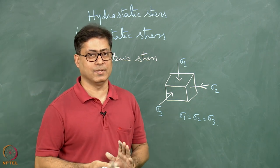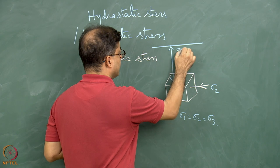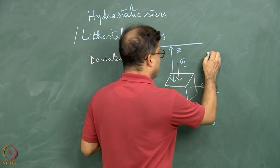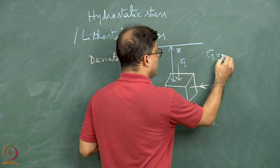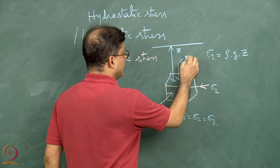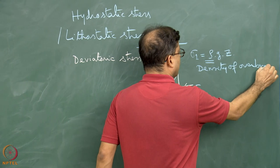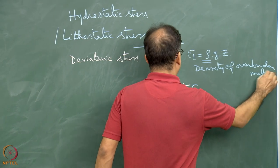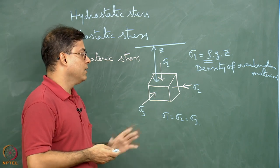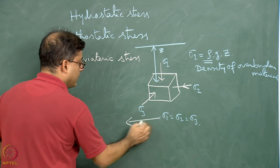Imagine this cube is at some depth z below the ground surface. The stress exerted by the column of rocks of vertical thickness z is the overburden. So sigma-1 becomes equal to rho times g times z, where rho is the density of the overburden material. If the material is not deforming, rho-g-z amount of stress acts on all sides of the cube. If folding or faulting is going to happen, this hydrostatic stress regime is altered and we get a situation where the stresses are not equal.